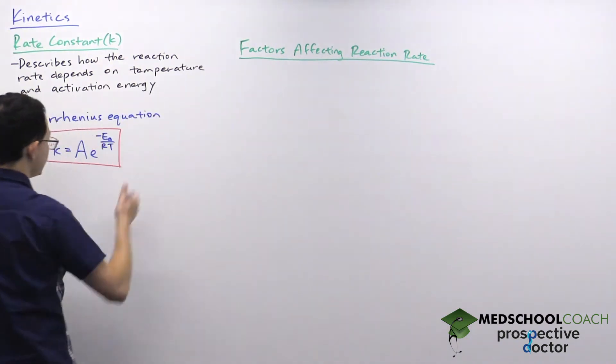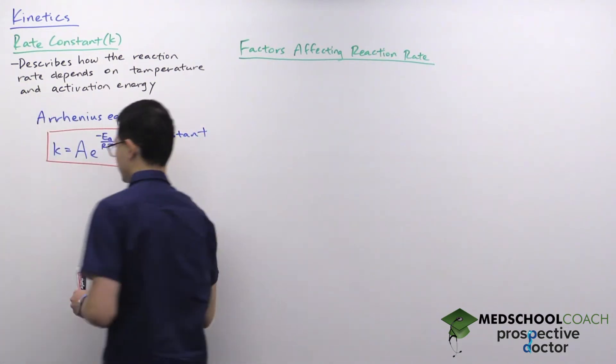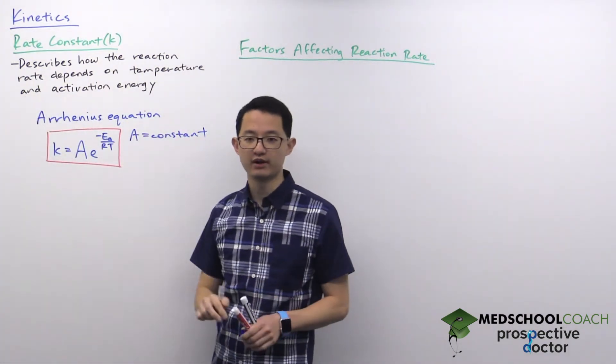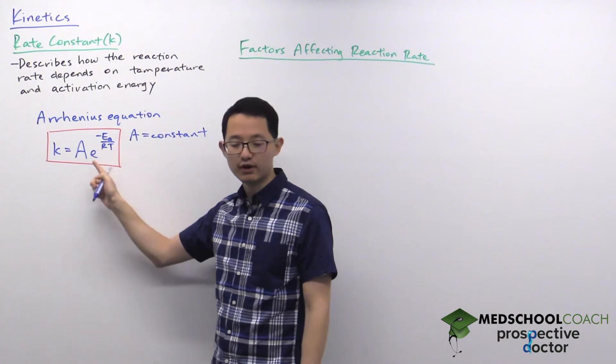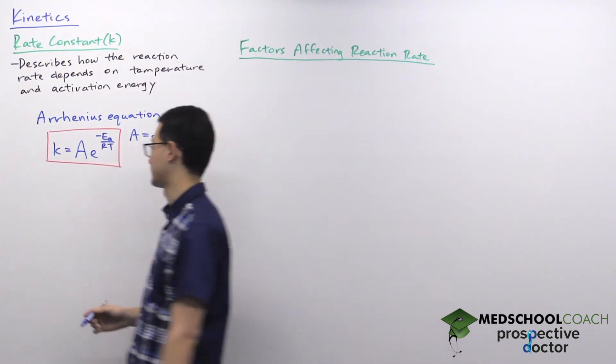Now in this equation, A is a constant that you don't have to worry about for the MCAT, so we can disregard that for the most part. E is also a numerical constant, it's like pi but a different number, so again don't need to worry too much about that.